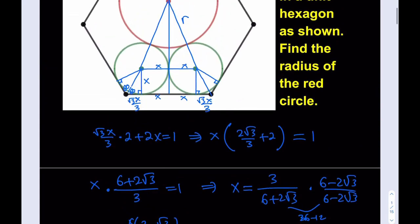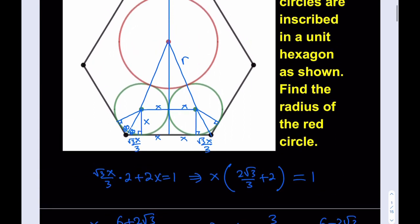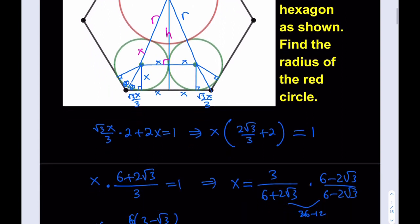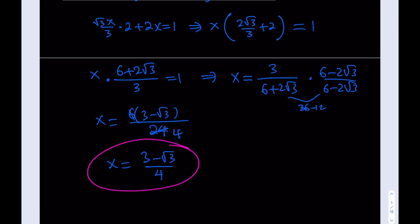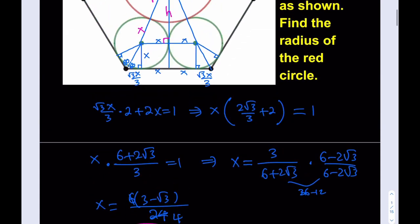Let's go ahead and write an equation to find the radius of the red circle. This is X and this is R. So we have a right triangle here whose hypotenuse is X + R, and whose base is X. Let's call the height H.